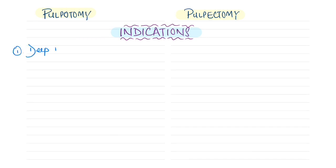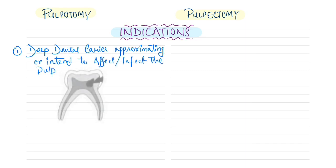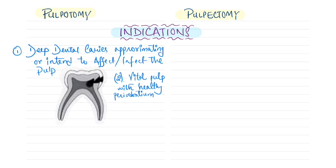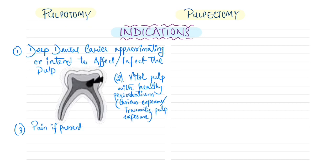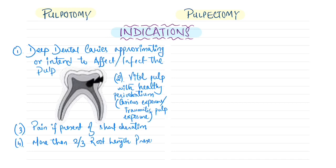Indications for pulpotomy: deep dental caries approximating or likely to affect the coronal pulp tissue; the coronal pulp should be vital with healthy periodontium; there may be carious or traumatic pulp exposure; pain should be of shorter duration; and more than two-thirds of root length must be present.